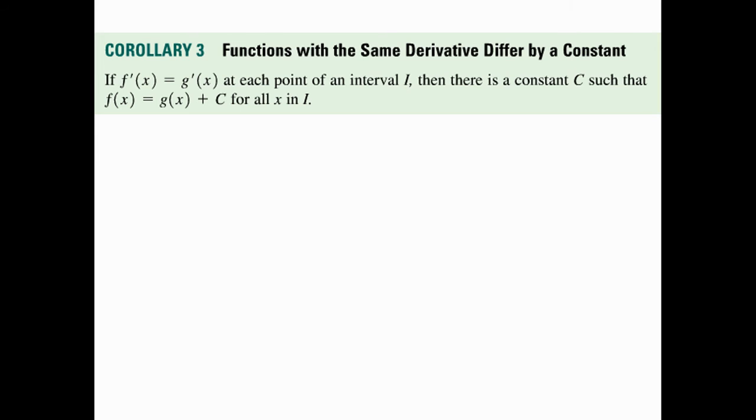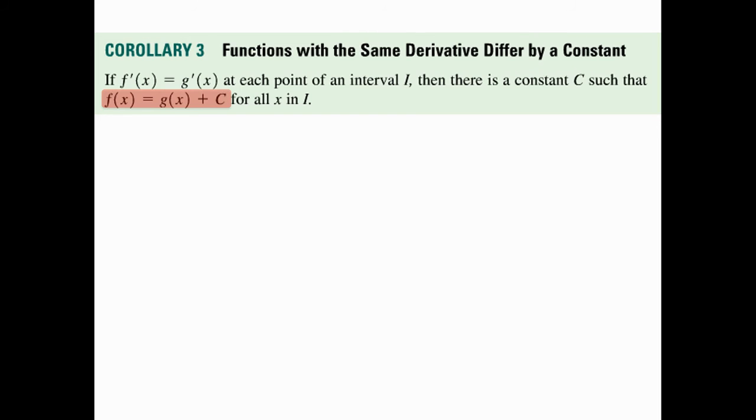What this is is a corollary you wrote down. What it tells you is that if you have a relationship, f prime is equal to g prime at every point, then there's some constant where the antiderivative of your function is exactly the same, but it just differs by c.